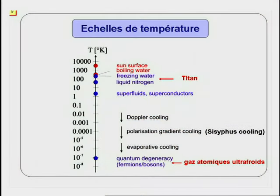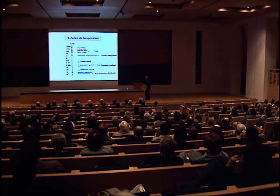Il est utile de représenter sur une échelle logarithmique les différentes températures d'intérêt. L'usage d'une échelle logarithmique se révèle indispensable pour réunir toutes ces températures tellement différentes sur une seule figure. On voit d'abord que la température de notre vie quotidienne, la température de l'ébullition de l'eau, de la cristallisation de l'eau, sont beaucoup plus proches de celles de la surface du Soleil que des températures de gaz piégés.